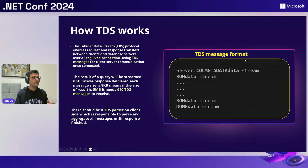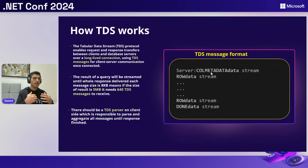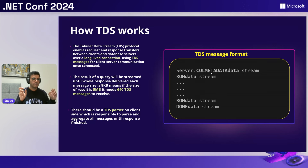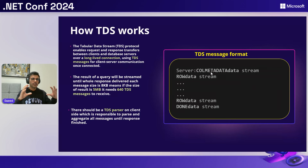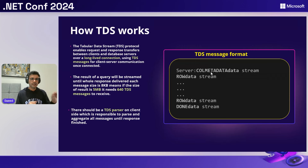The default size for each TDS packet is 8 kilobytes. So for example, if we have a 5 megabyte response to send back to the client, SQL Server has to send around 640 TDS messages. You can see how much frequency there is between server and client. The TDS message format starts with column metadata — the server tells the client which columns are coming — then sends raw data row by row, and finally sends a done token.